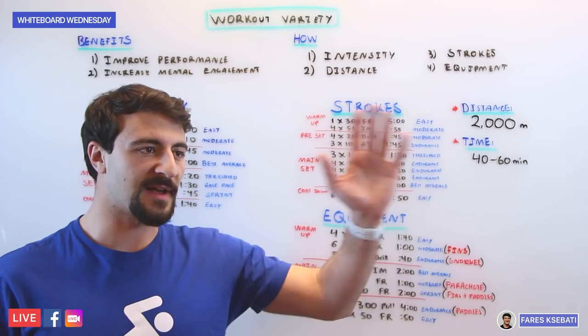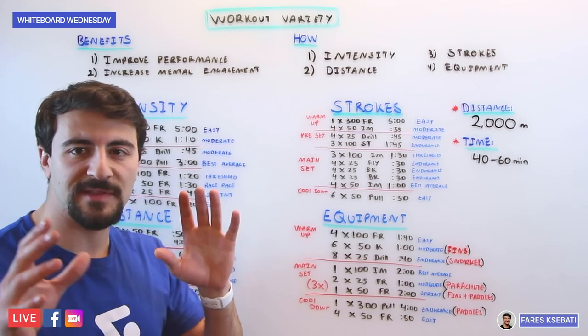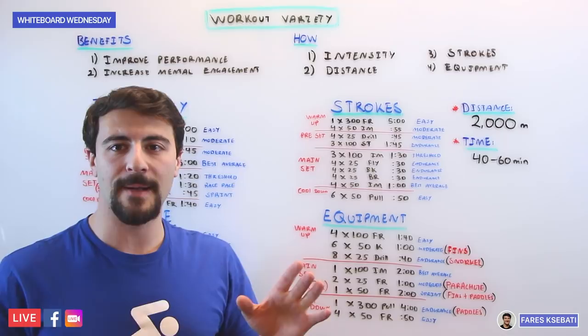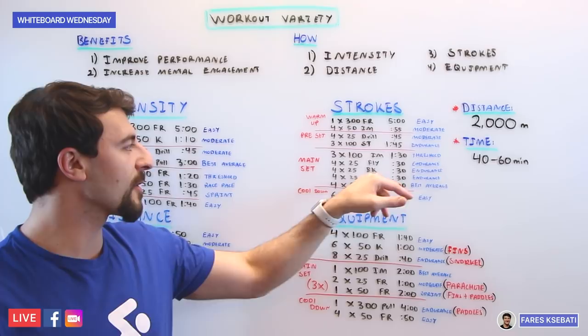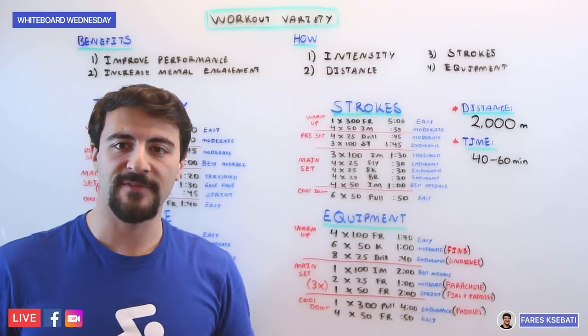Now the main set in the stroke variety workout—we're doing all the strokes—we're going to go 3x100s IM, short for individual medley, where you go 25 butterfly, 25 backstroke, 25 breaststroke, 25 freestyle. Those are threshold. Then you're going to go 4x25s butterfly endurance, 4x25s backstroke endurance, 4x25s breaststroke endurance. All of those 12x25s across three sets are going to be on the :30.